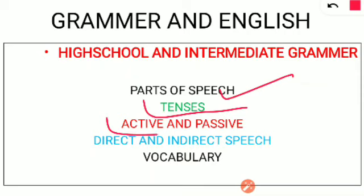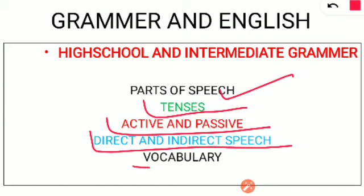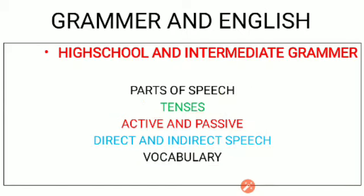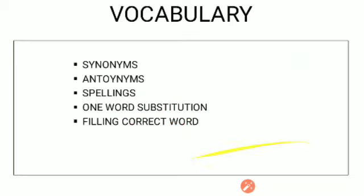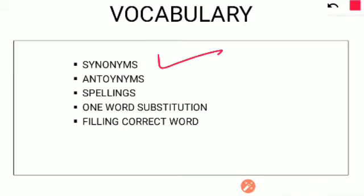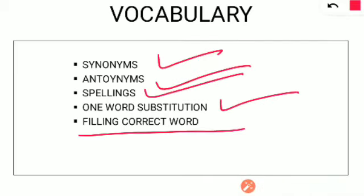Active and passive, and direct and indirect questions will be at a slightly surface level. Vocabulary will also have many questions — synonyms, antonyms, spelling, one-word substitution, and filling in the correct word. You will be given a sentence and you have to select the appropriate word, which is also a vocabulary-based question.